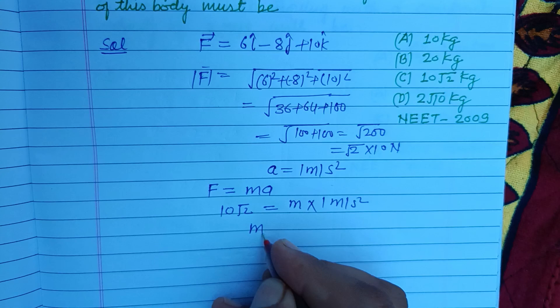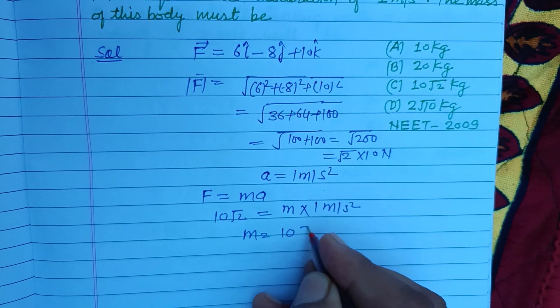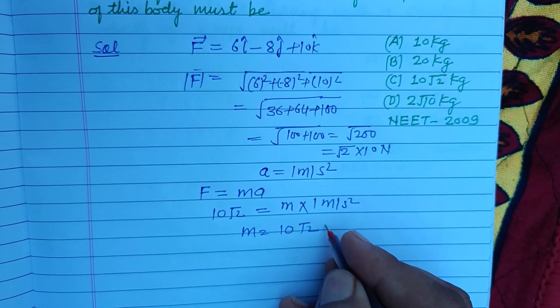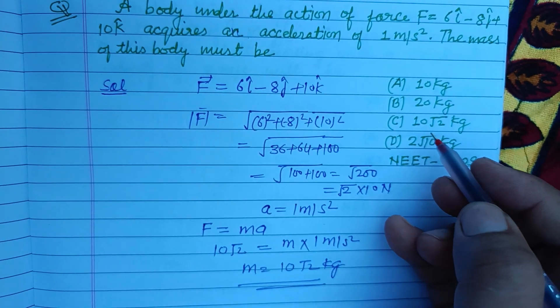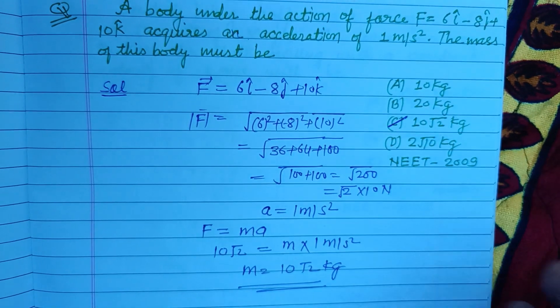So m equals 10 root 2 kilogram. This is our answer, which is found in option C, so option C is correct.